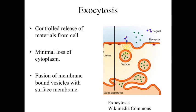Exocytosis is a controlled release of material from the cell — like the release of a neurotransmitter or a digestive enzyme. The enzyme is produced as a protein within the rough endoplasmic reticulum, modified within the Golgi apparatus, maintained within a membrane-bound structure, and stored. Then, in response to a signal, this membrane-bound structure fuses with the external plasma membrane — so we don't lose cytoplasm — and we dump out whatever that material is outside of the cell. It's a very controlled, regulated release of materials without the risk of things leaking out.